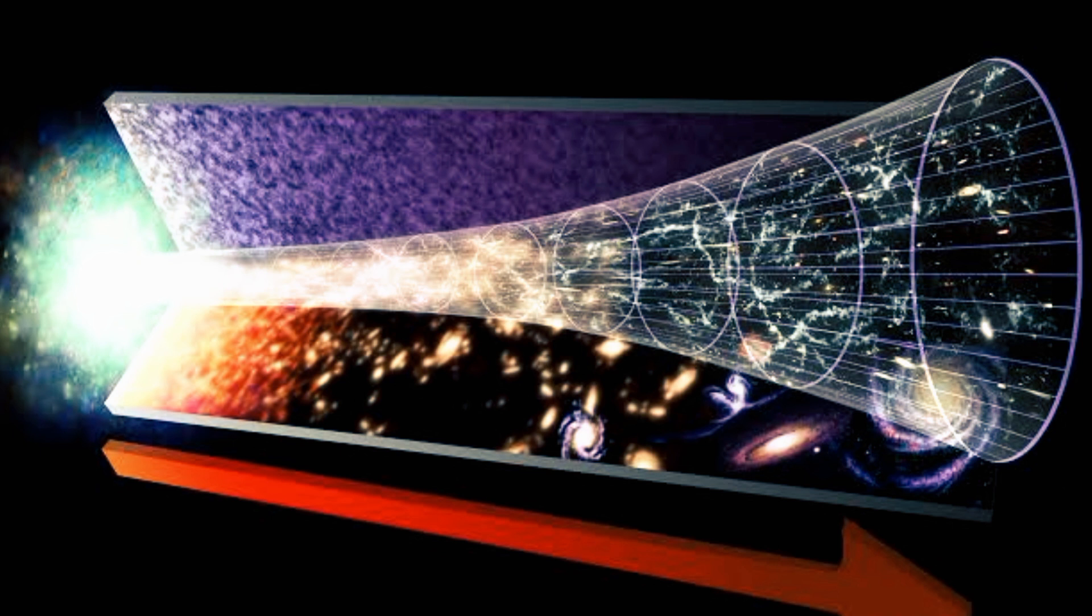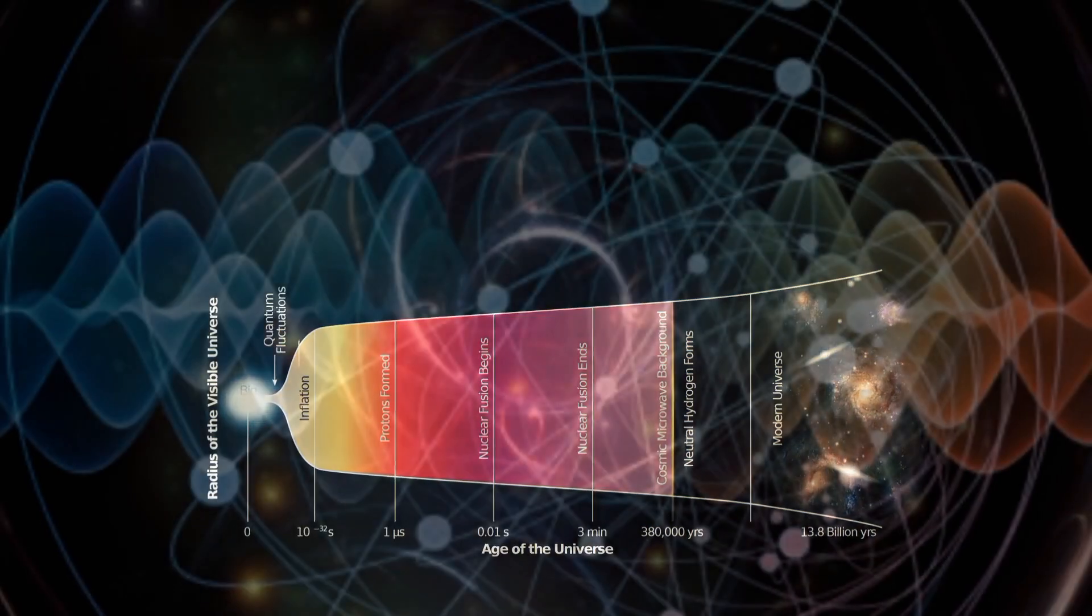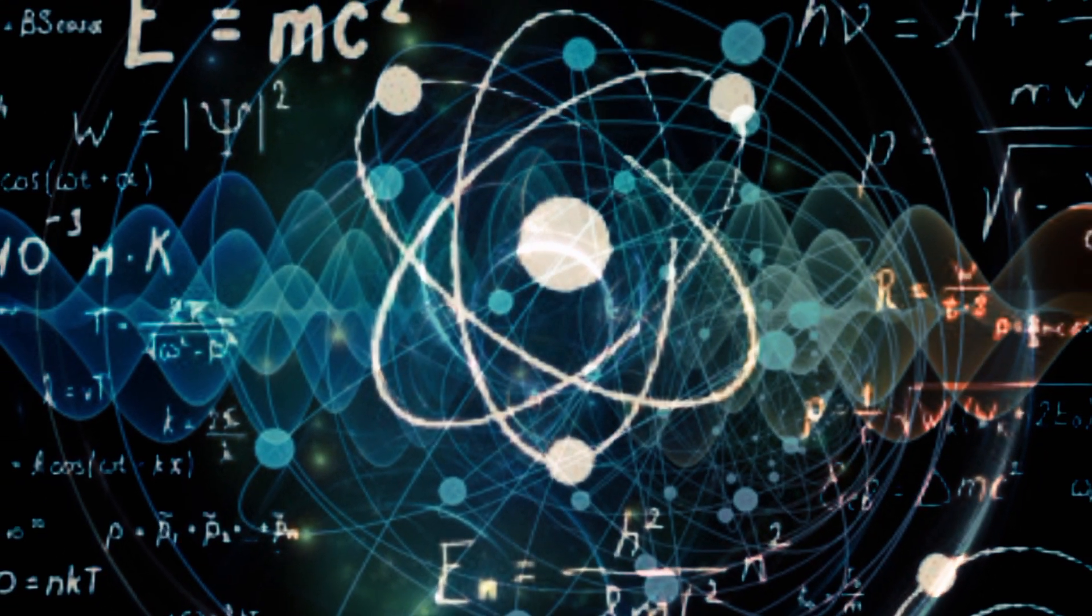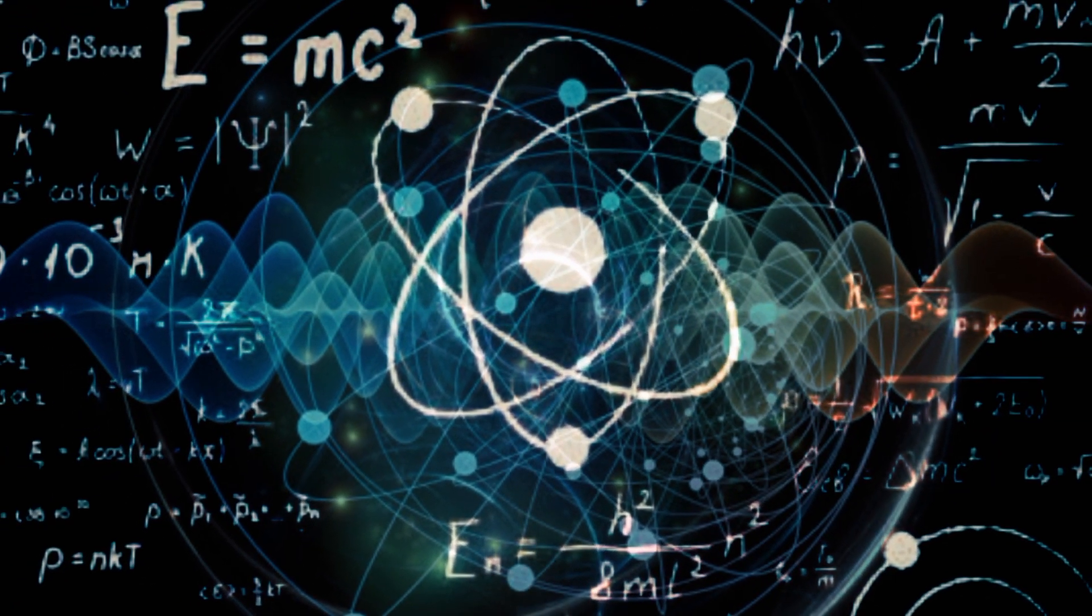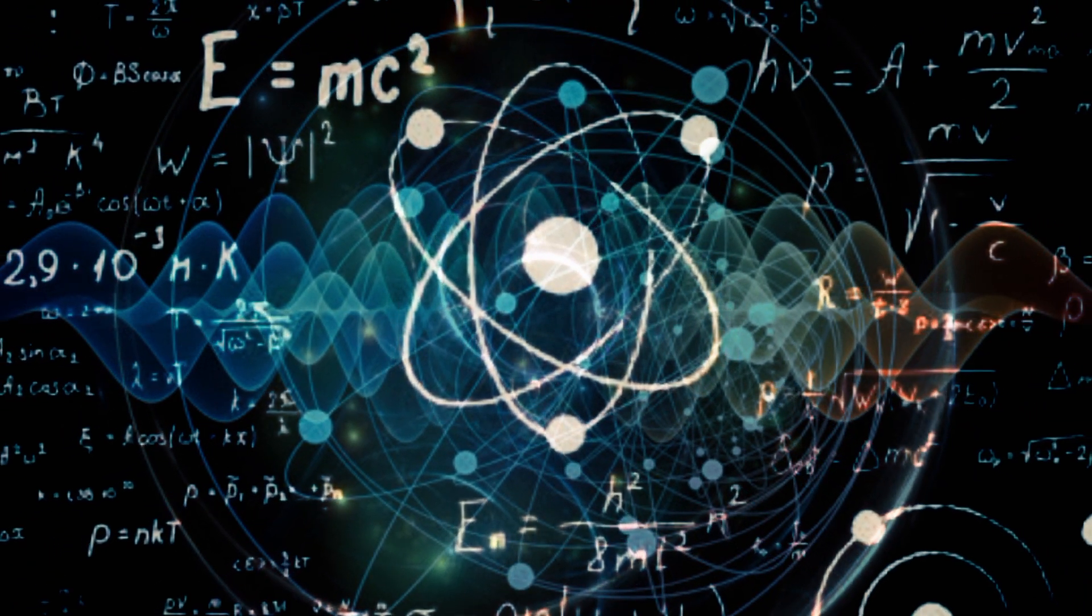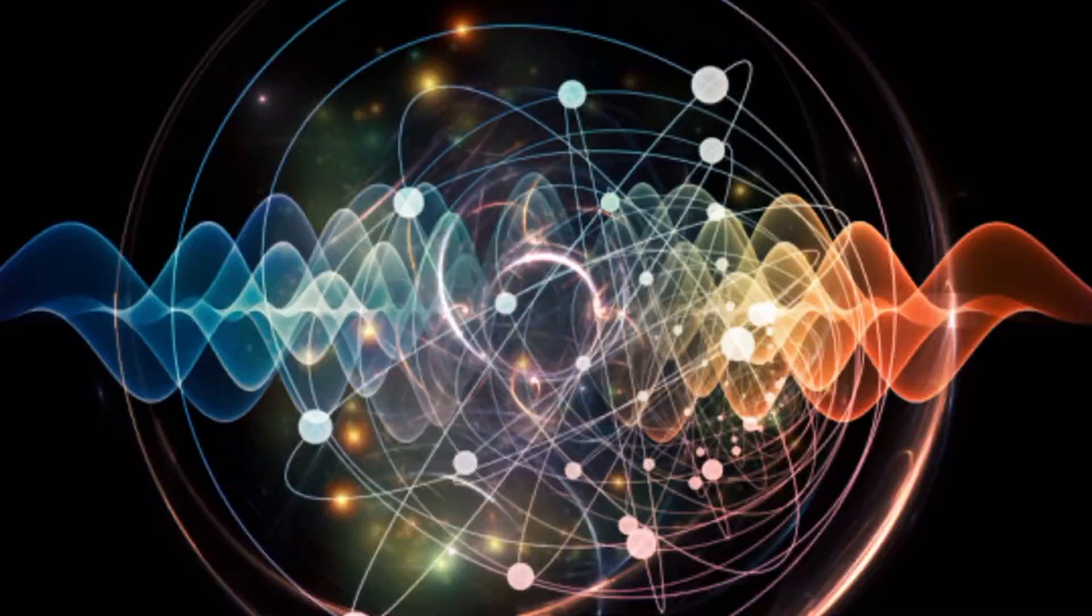But wait, there's more to the story. Quantum mechanics, the science of the very small, introduces another layer of complexity. In the quantum world, particles can spontaneously appear and disappear thanks to a phenomenon called quantum fluctuations.